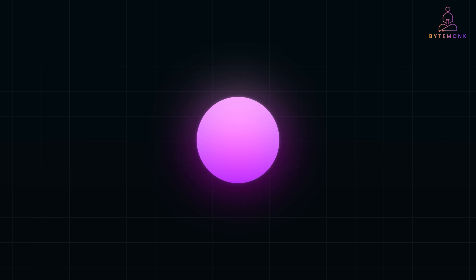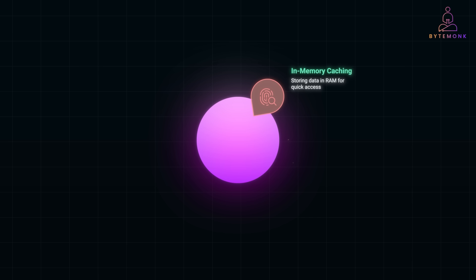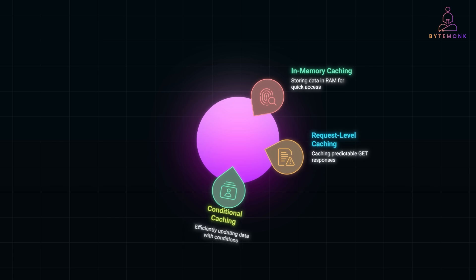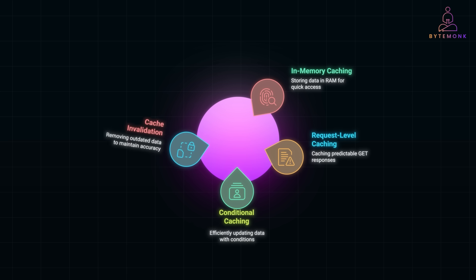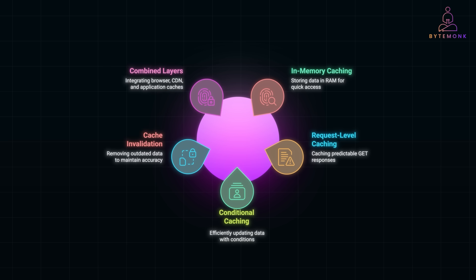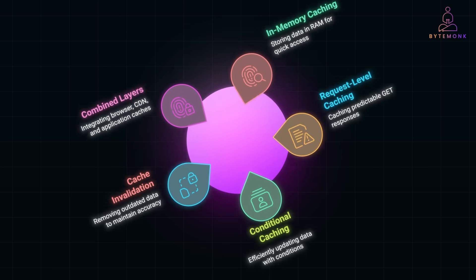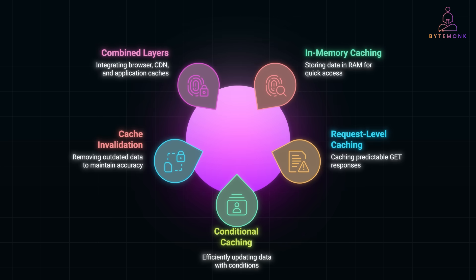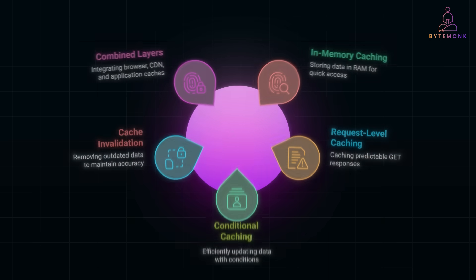Bringing it all together: use in-memory caching for frequently accessed data, implement request-level caching for predictable GET responses, leverage conditional caching for up-to-date bandwidth-efficient interactions, ensure consistency with robust cache invalidation strategies, and combine all layers — browser, CDN, and application — for ultimate performance. With this blueprint, you can design REST APIs that are not only fast, but also scalable and production-ready.